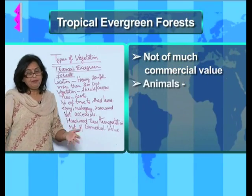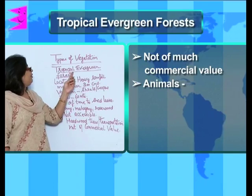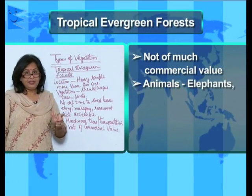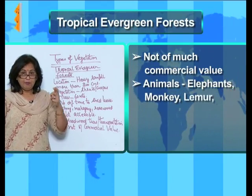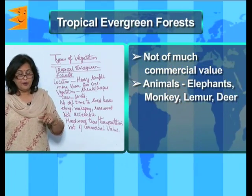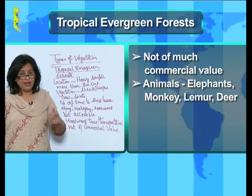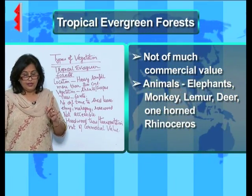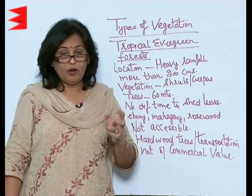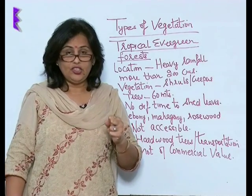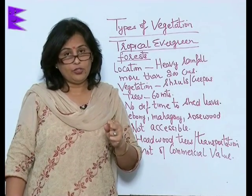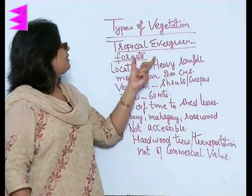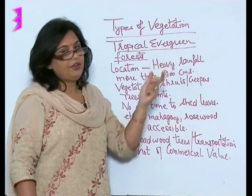The various animals found in the tropical evergreen forest are the elephants, the monkey, the lemur, the deer, and in Assam we also find the one-horned rhinoceros. Bats, scorpions, and leeches are also found in large numbers in this tropical evergreen forest.